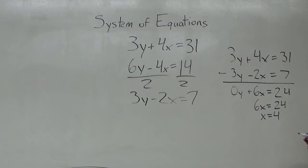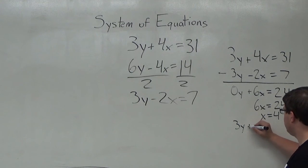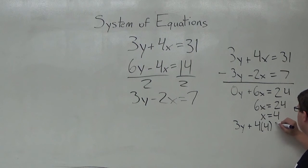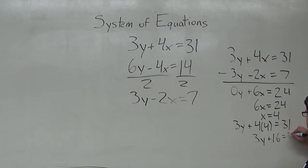So now using x equals 4, I'm going to plug it into the first equation. I'm going to get 3y plus 4 times 4 equals 31. 3y plus 16 equals 31.